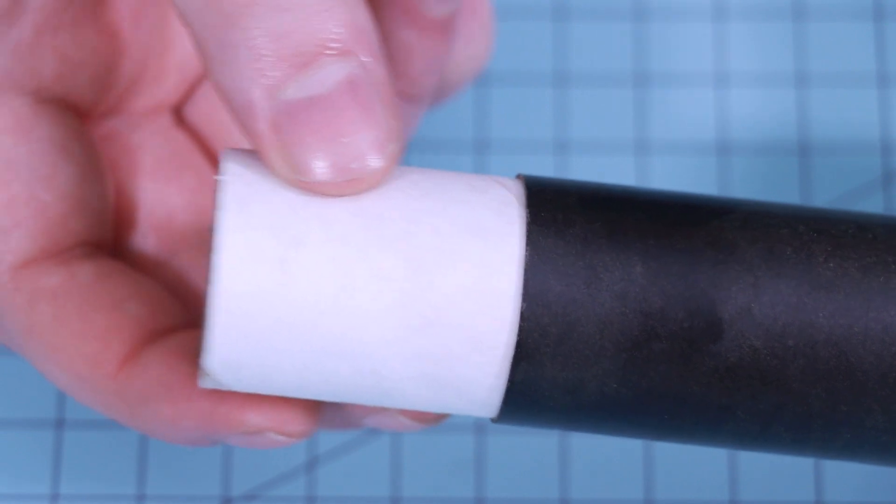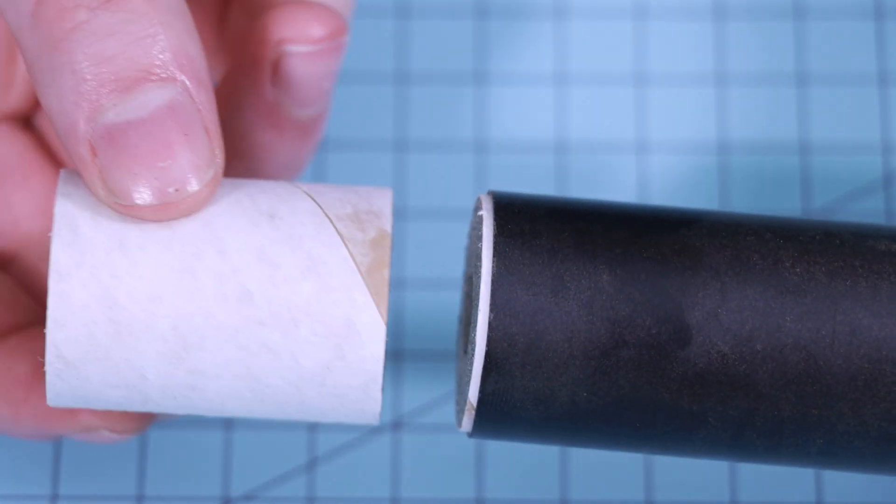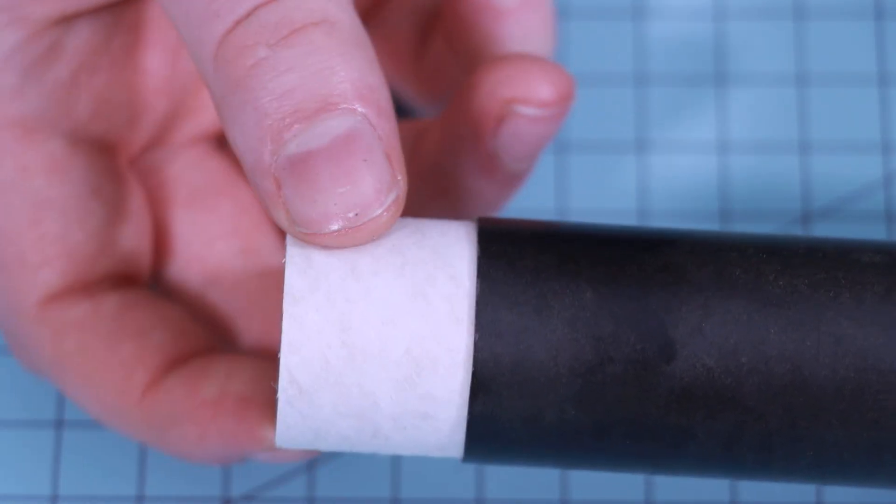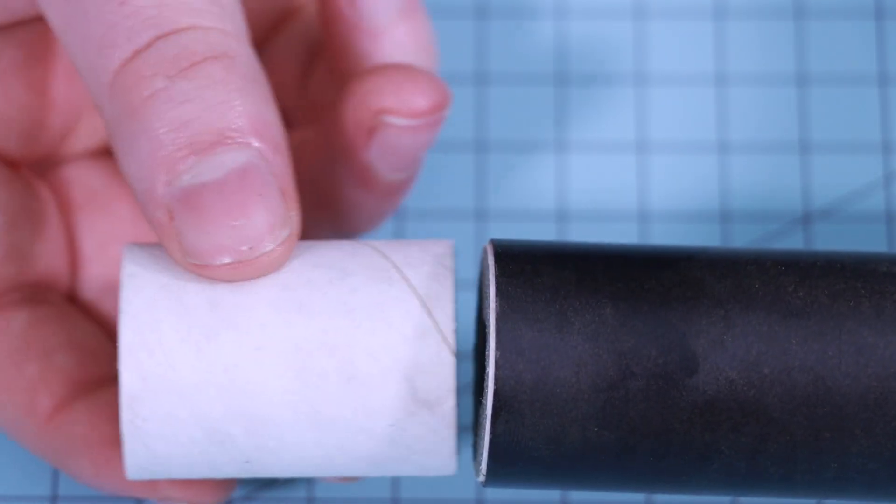Now I'm going to load all six grains of propellant into the liner. They're all the same, so don't worry about trying to keep them in any sort of order.